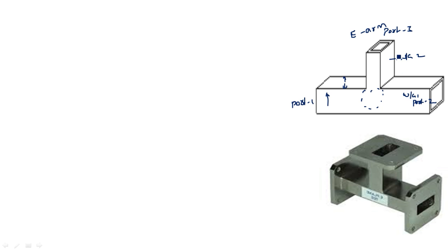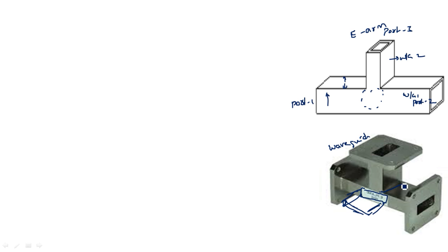This is an actual waveguide component you can observe in the laboratory. By seeing the waveguide component you should be able to name whether it is an H-plane T-junction or E-plane T-junction. If the cut is along the narrower side and the waveguide is extended from there, that is an H-plane T-junction. If the waveguide has a cut along the broader side and is extended with a port there, it is known as an E-plane T-junction. So E-plane T-junction has a cut along the broader side and H-plane T-junction has a cut along the narrow dimension.